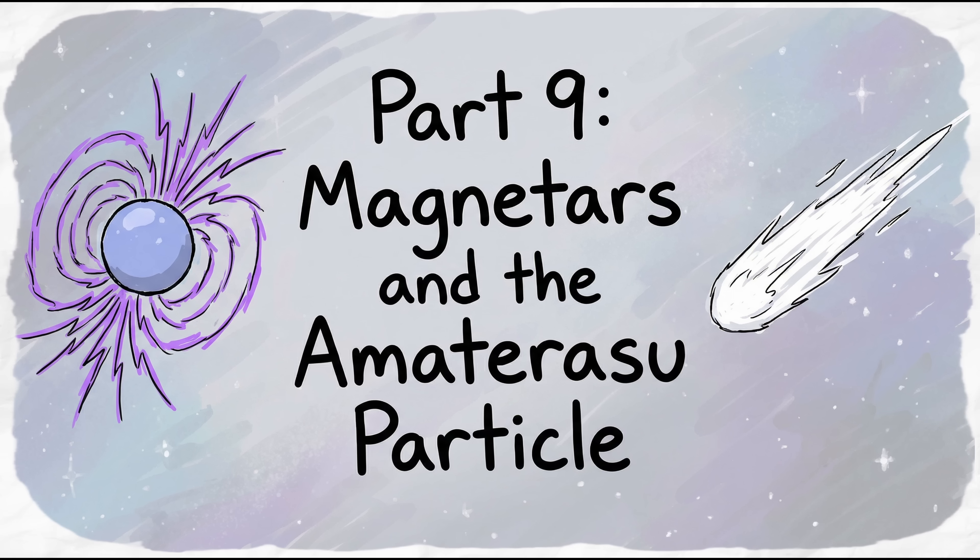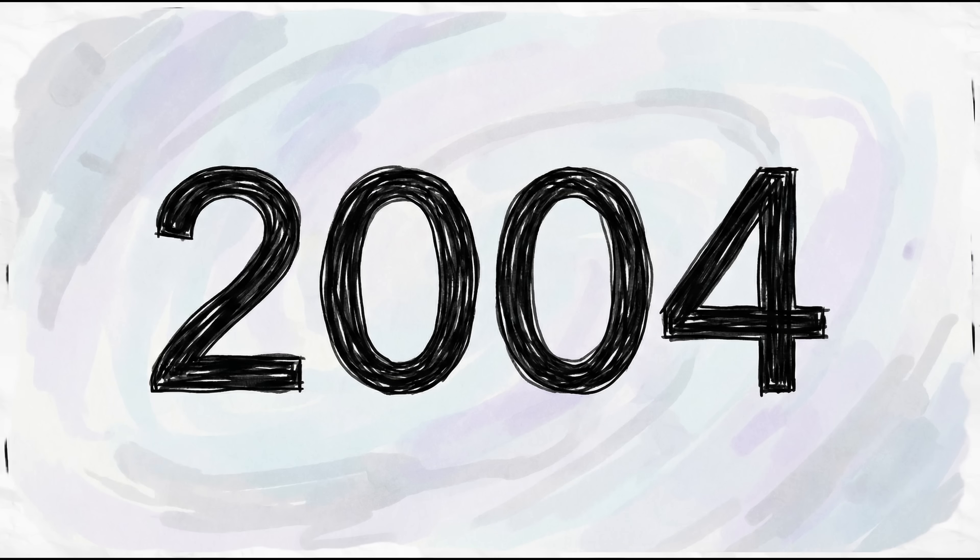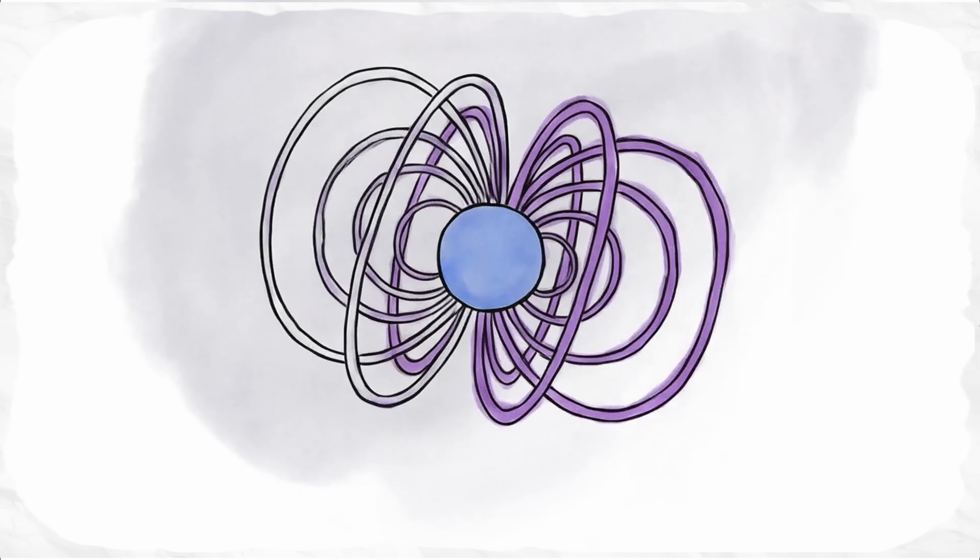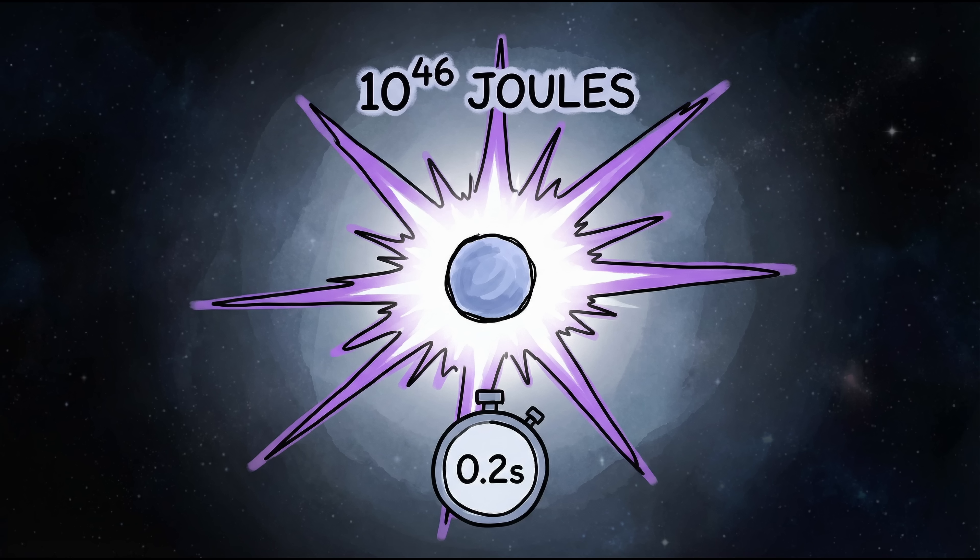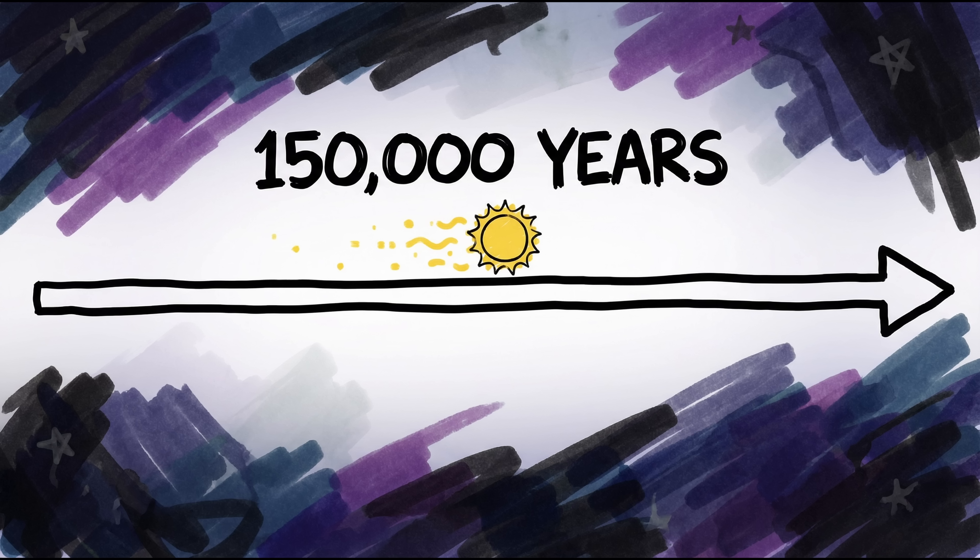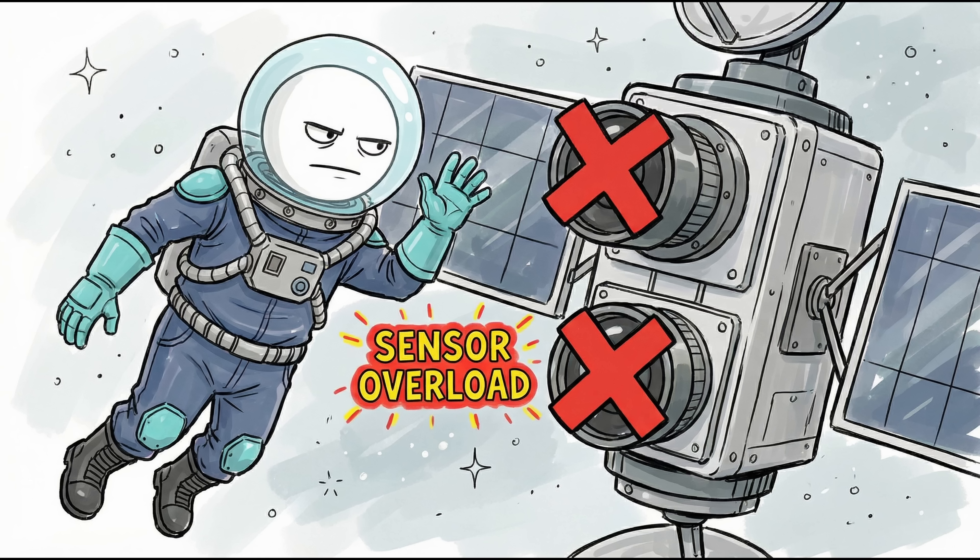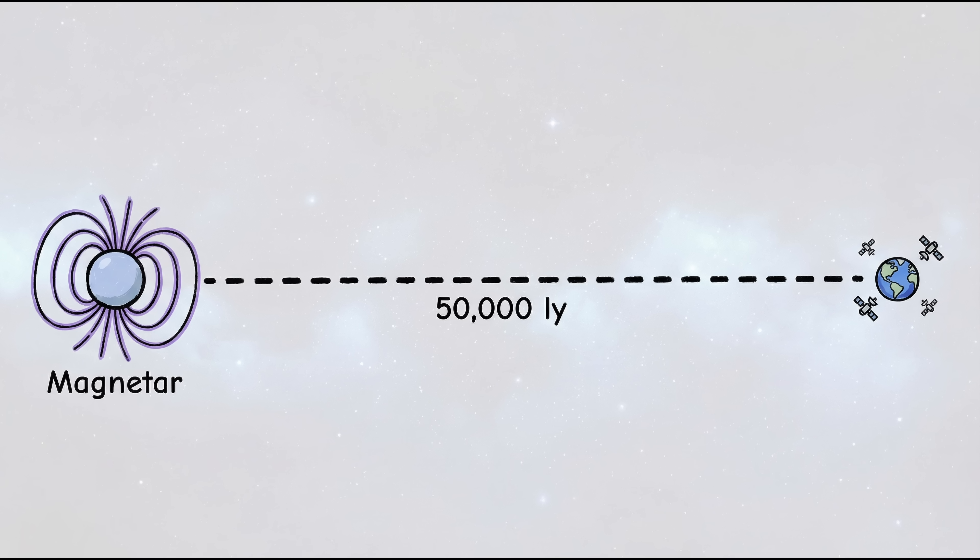Part 9. Magnetars and the Amaterasu Particle. In 2004, the Magnetar SGR 1806-20 released more energy in one-fifth of a second than our sun has produced in 150,000 years. The blast was so powerful, it totally blinded every X-ray satellite in orbit from 50,000 light-years away.